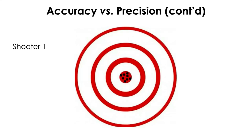We can use the target-and-shooter metaphor to illustrate the difference between accuracy and precision visually. Here we have a red target and shooting results represented by black dots, with the aim being the very center. Shooter 1 is both accurate and precise, as all shots landed at the center and are very close to each other. Shooter 2, on the other hand, has shots whose average location is far from the center — however, the shooter is quite precise, as all shots are very close together regardless of how far they are from the center, suggesting the gun is not well calibrated.